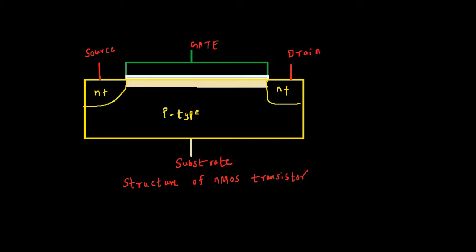We also have a gate electrode — this is usually made of polysilicon material. Notice that between the gate electrode and the substrate there is a tiny gap, and that gap is filled with a thin film of silicon dioxide (SiO2).